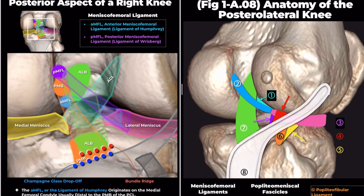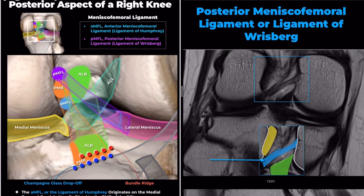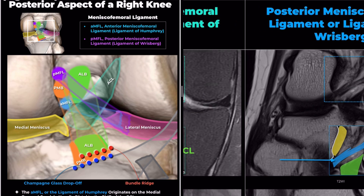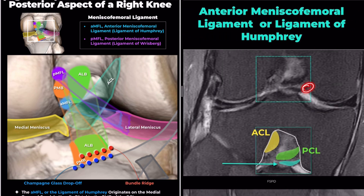The meniscofemoral ligaments are named relative to the PCL: the anterior meniscofemoral ligament, the ligament of Humphrey, and the posterior meniscofemoral ligament, the ligament of Risberg. On the femoral side, the meniscofemoral ligaments show two attachments. The Risberg ligament attaches just proximal to the femoral attachment of the posterior medial bundle of the PCL, while the Humphrey ligament attaches just distal to it.